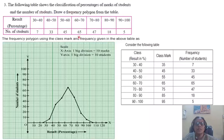60 to 70%, 65 students. 70 to 80%, 47 students. 80 to 90%, 18 students, and 90 to 100, 5 students. Frequency polygon using class mark and frequency given. Now, consider this table. Class is given in percent. Class mark, midpoint of the class, we will find out.